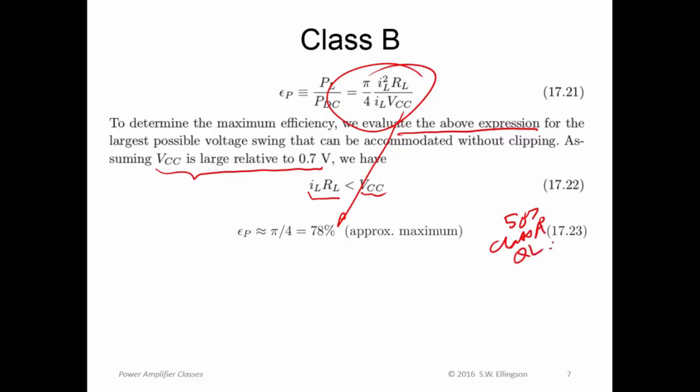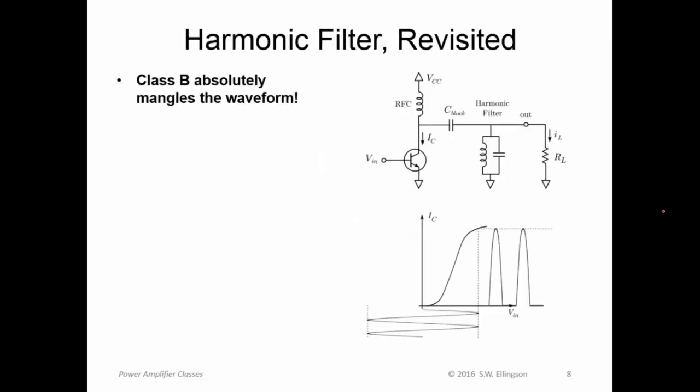That's the approximate maximum efficiency for class B. And that compares to 50% for class A when we're quasi-linear. So we see the efficiency of class B is significantly improved over class A. And the price we paid is to mangle that waveform, is to lose half the waveform. So how is it that we can tolerate this?